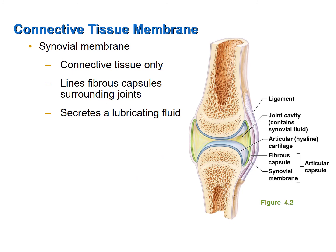The only connective tissue membrane is the synovial membrane, which is found at a synovial joint. Synovial joints are the most movable joints of the body, such as your shoulder, knee, and hip joints. At a synovial joint, the bones are separated by a space filled with synovial fluid. The synovial membrane lines that joint and is the connective tissue membrane responsible for secreting the synovial fluid, which is very similar in consistency to uncooked egg whites and its purpose is to lubricate the joint.